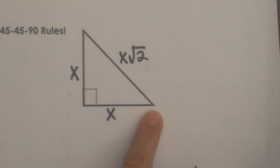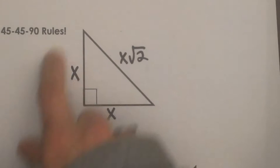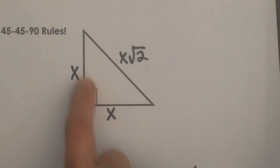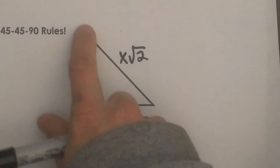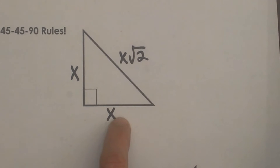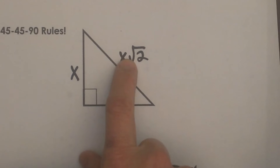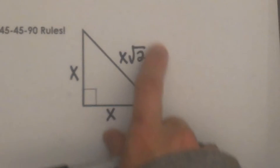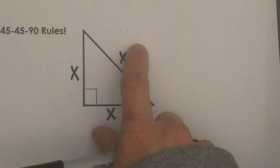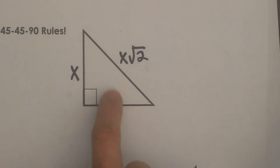In your SAT booklet you are going to have a formula or triangle at the very front that looks like this. You are going to have a little triangle and this is isosceles — two of the legs are the same and then you have a hypotenuse. If you know the legs of the isosceles triangle, all you have to do is multiply by the square root of 2 to get the length of the hypotenuse. Also if you are given the length of the hypotenuse and want to work back to the leg, you would divide by the square root of 2.